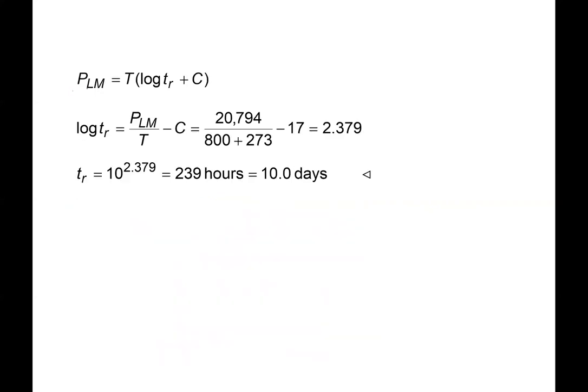So that's going to be here, 20,794. And now we can go ahead and fill in the temperature in Kelvin. The C value that was given, which was 17. And then we're going to solve for the log of the rupture time. And that time, remember, is in hours. So there we go. We fill everything in, we get 2.4 hours. I should say this is log hours. That's the units actually. So that's the log of the rupture time, 2.379 log hours. And so then to get the rupture time, then just raise that as the power for 10. We get 239 hours or 10 days.